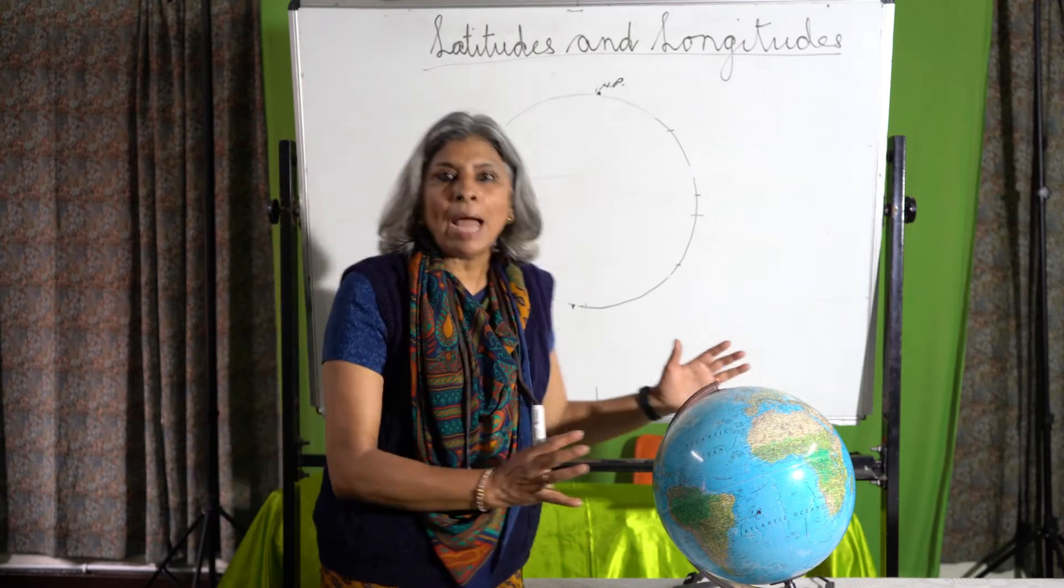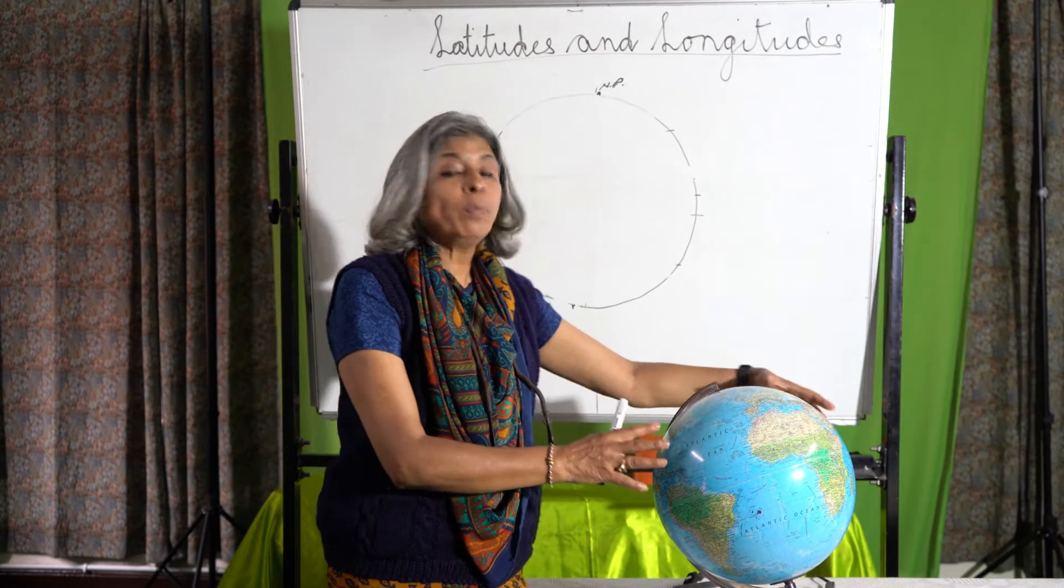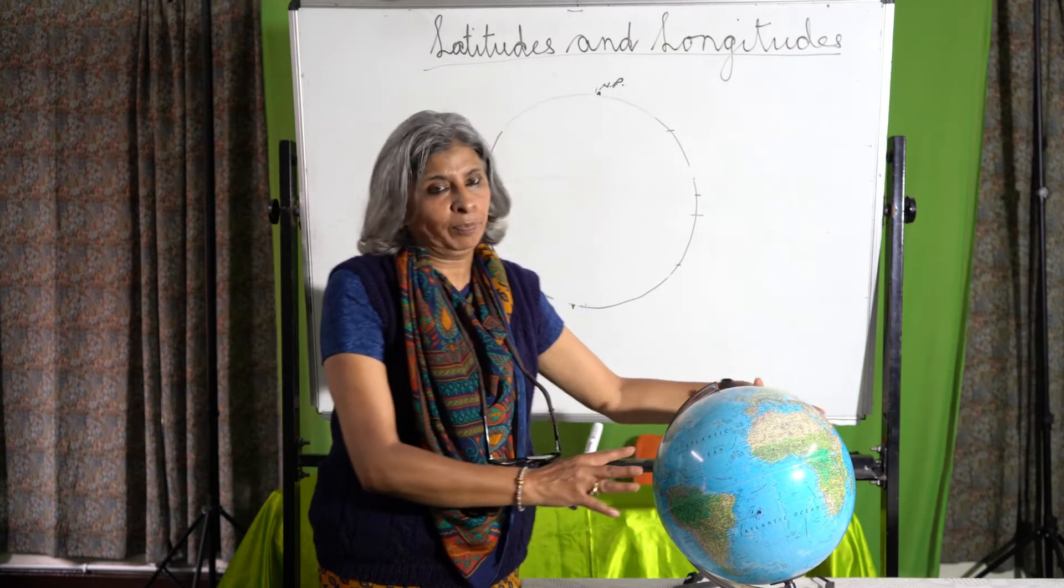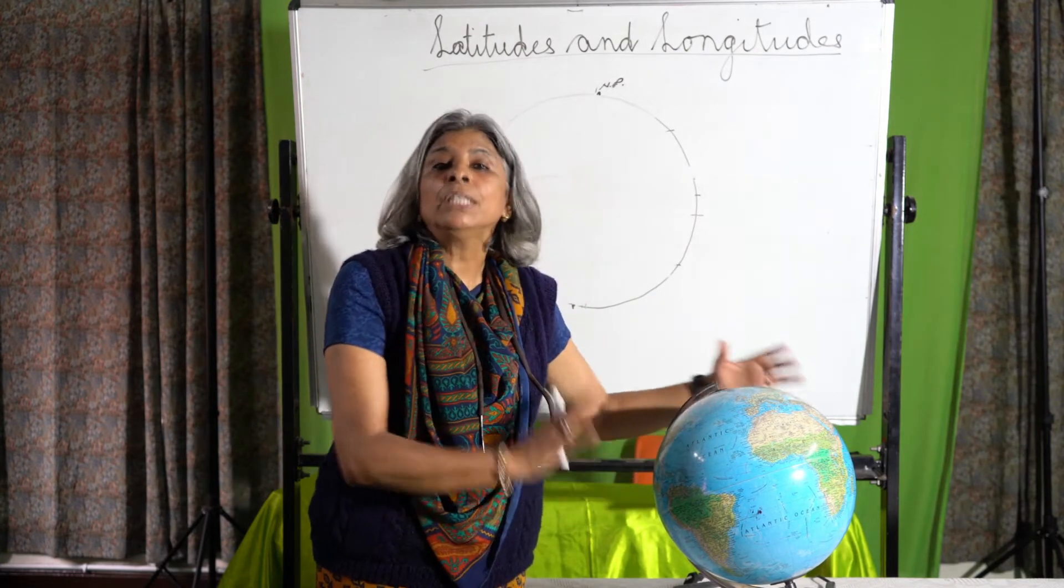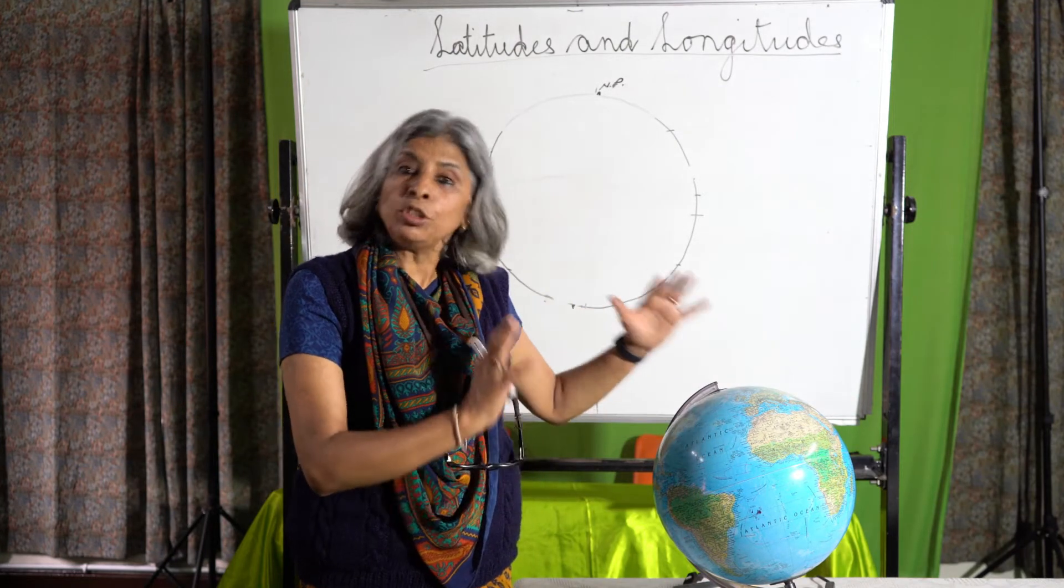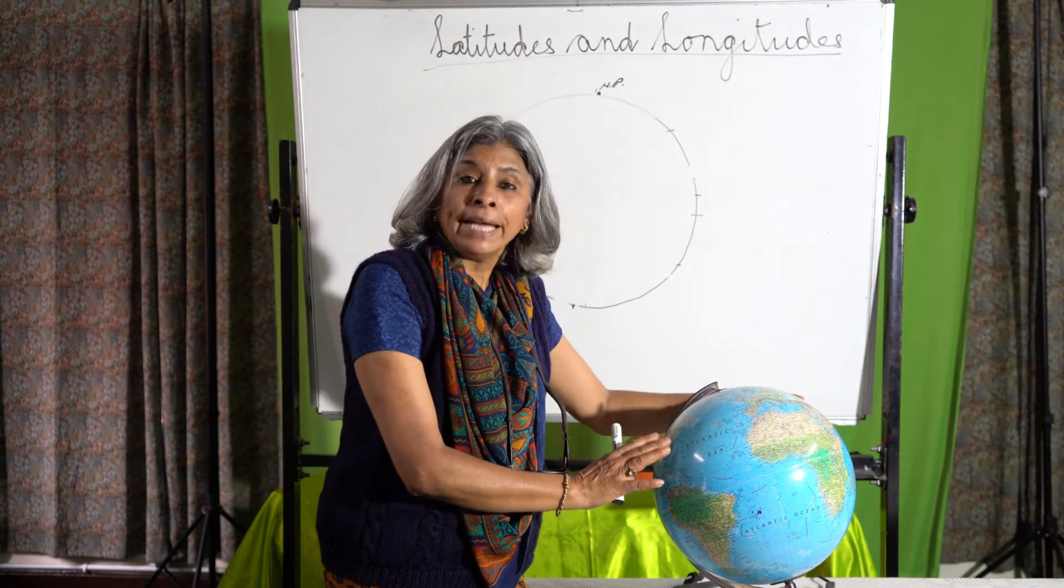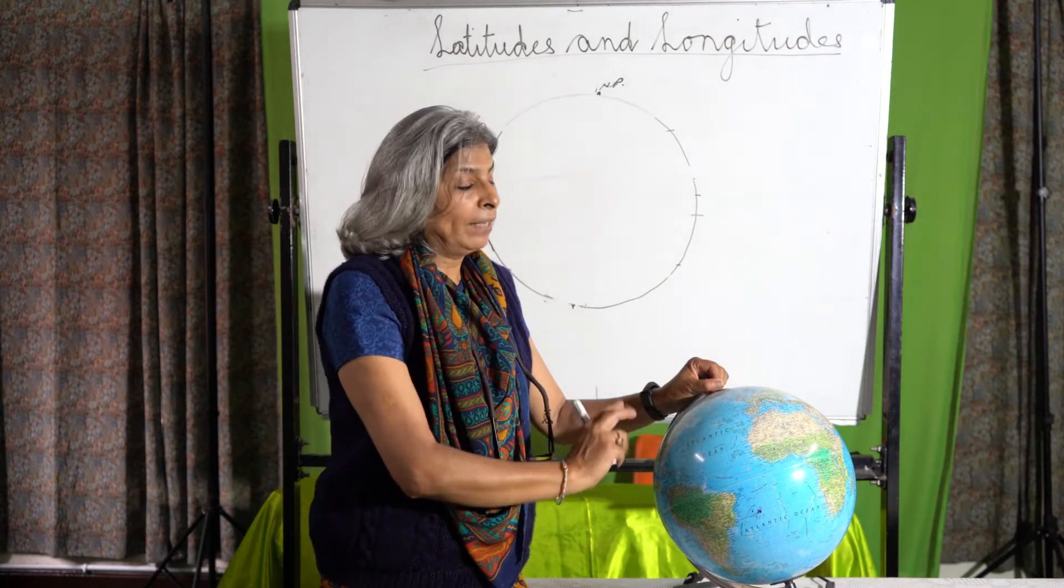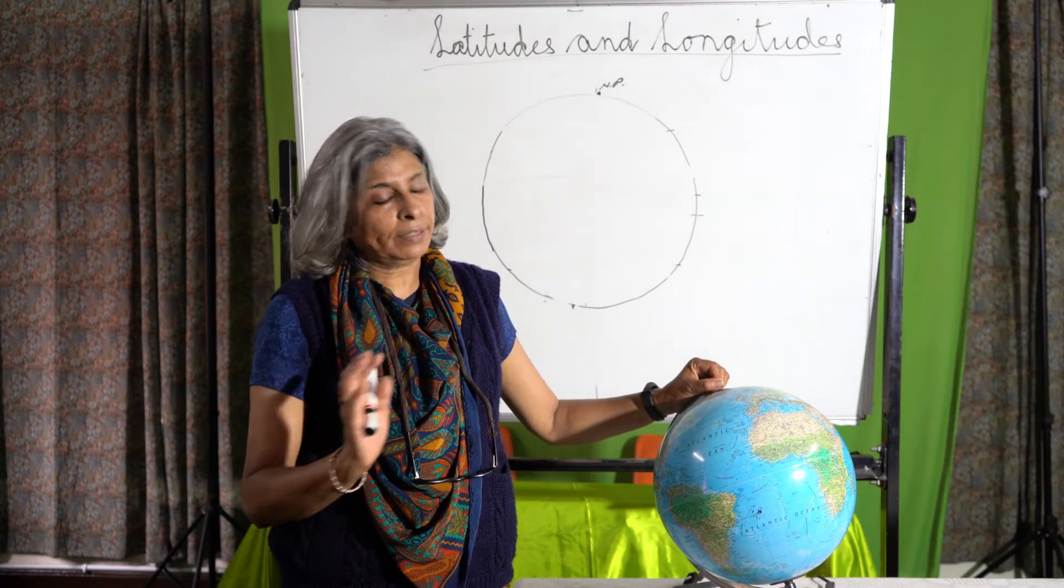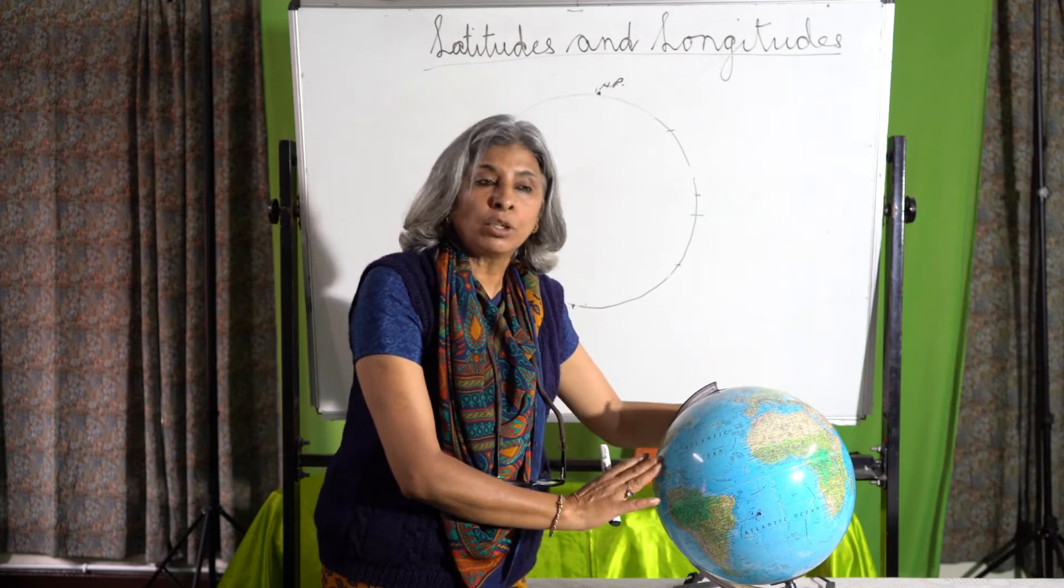When we look at a map or a globe, what is a globe? A globe is the miniature of the earth. It shows us the physical features of the earth in a broad way, not minute but broadly. Another thing it tells us is about the axis and the movement of the earth that we study when we look at a globe.